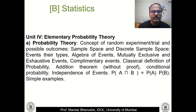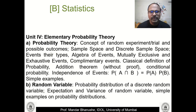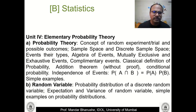In Unit 4 we talk about probability: basic definitions, concepts of trials, experiments, outcomes, sample space, algebra of events, different types of events, and simple probability formulas with examples. We also cover random variables, probability distributions of a discrete random variable, and concepts of expectation and variance. There is one more unit on probability distributions in the next semester.